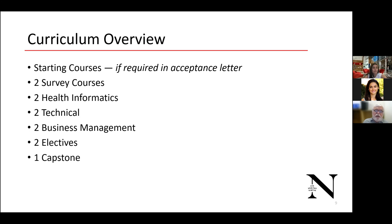You need to complete a minimum of two survey courses: Introduction to Health Informatics and American Health Care System. Then you take selectives — two in the health informatics area, two in the technical area, two in the business management area, and two electives, which can come from any of the three core areas. At the end of the program, you complete a capstone course where you pull together many of the things you've studied throughout the program.